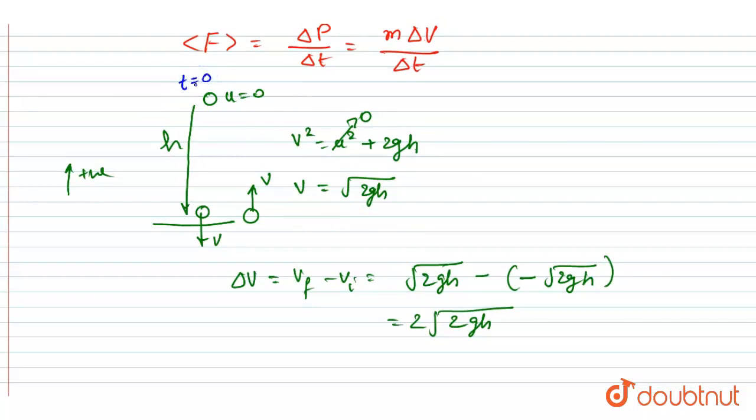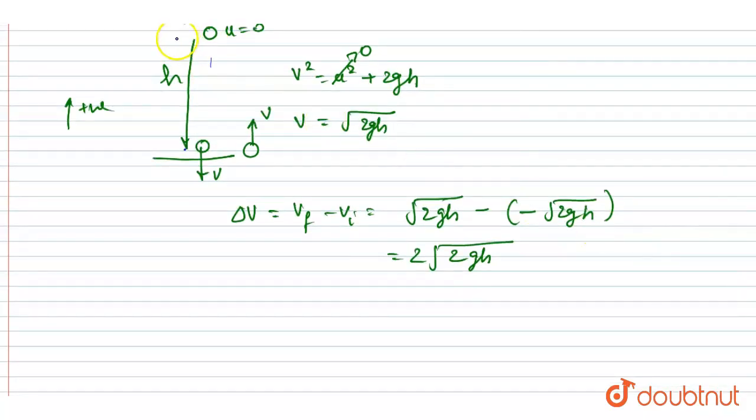So if we see, the ball is dropped from here at t equals to zero and it takes some time to reach here and then it bounces back and reaches to the same height. Very simple. So I will write here, if it is dropped at t equals to zero, so it will reach at some time, let's suppose I say it t₀.